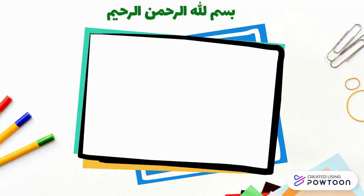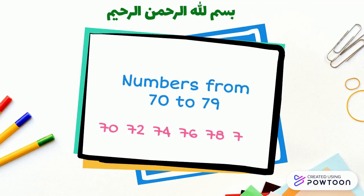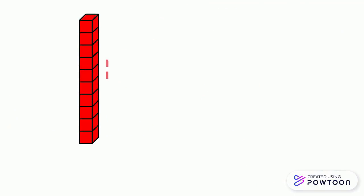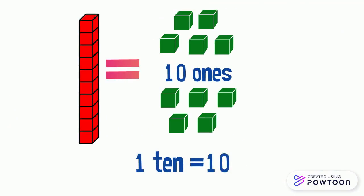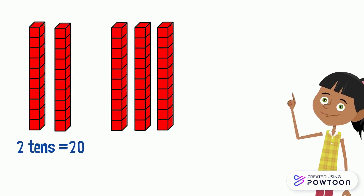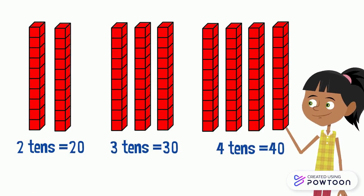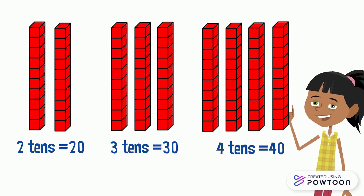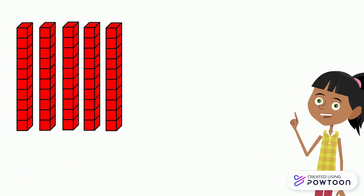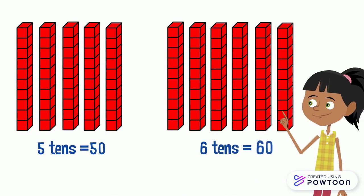Numbers from 70 to 79. First, we are going to remember that 1 ten equals 10, 2 tens equals 20, 3 tens equals 30, 4 tens equals 40, 5 tens equals 50, 6 tens equals 60.